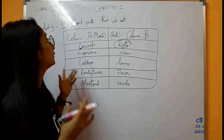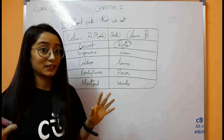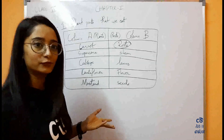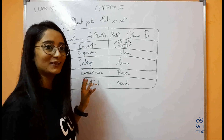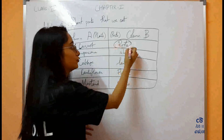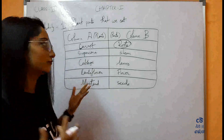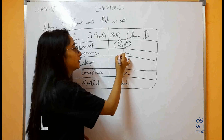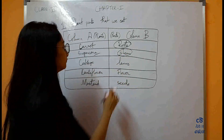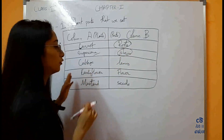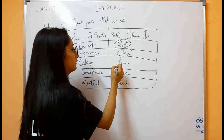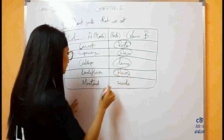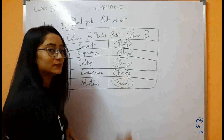Now we'll discuss the plant parts that we eat. Let us take it as an activity. Carrot — what is the edible part of carrot? Carrot is actually a root. Sugar cane — for sugar cane, the edible part is the stem. For cabbage, it is the leaves. And cauliflower is a flower. And mustard, obviously, is a seed.